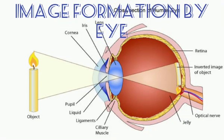In this video, I will discuss image formation by the eye. In my last video, I discussed the structure of the eye, covering the different parts: conjunctiva, cornea, iris, pupil, ciliary muscles, retina, and others.